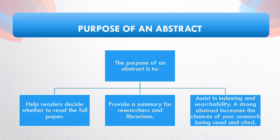The purpose of an abstract in academic research is multifaceted and pivotal to scholarly communication. Beyond its role as a concise summary, an abstract serves as a critical tool for readers, aiding in their decision to delve deeper into the full paper based on the study's relevance and findings. Moreover, it provides a rapid overview for researchers and librarians, facilitating efficient literature search and retrieval. Its inclusion in databases enhances the paper's discoverability and visibility within the academic community, contributing significantly to its dissemination and potential impact. A well-crafted abstract not only increases the likelihood of readers engaging with and citing the research, but also underscores its scholarly rigor and relevance in advancing knowledge within the field.